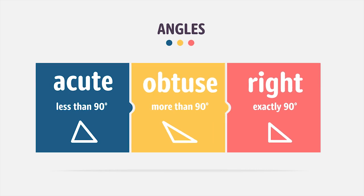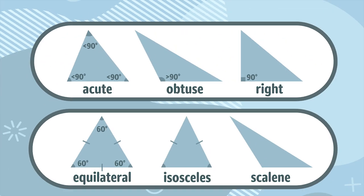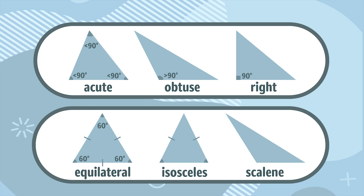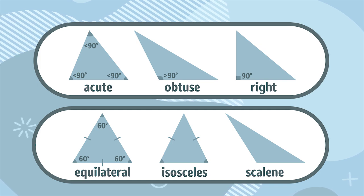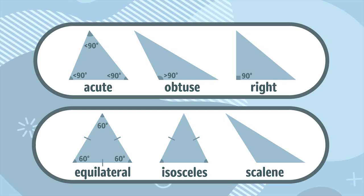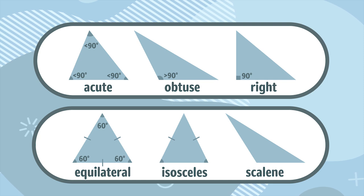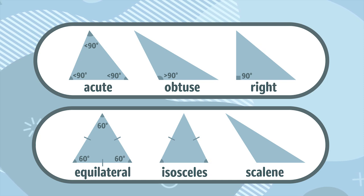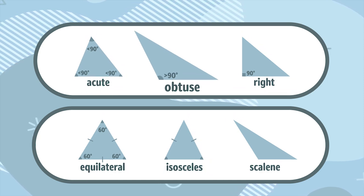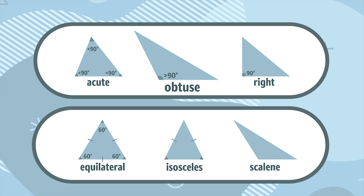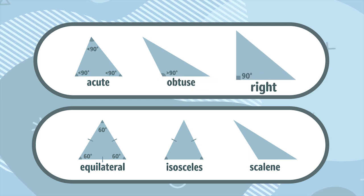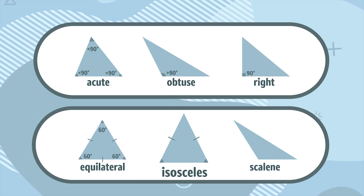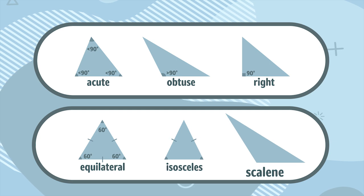There are many types of triangles and each type is classified by its angle measurements. The six main types of triangles are acute, obtuse, right, equilateral, isosceles, and scalene.